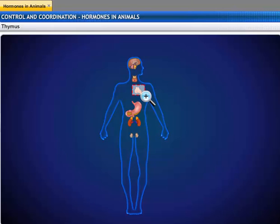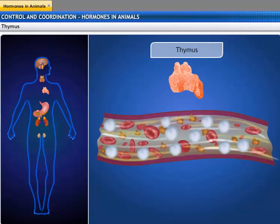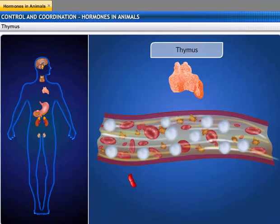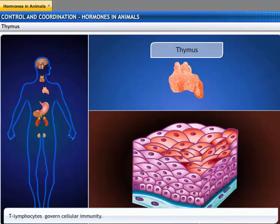The thymus is located in front of the heart in the upper part of the sternum. The thymus possesses a type of white blood cells known as T-lymphocytes. These T-lymphocytes govern cellular immunity, meaning they help cells recognize and destroy invading bacteria, viruses, abnormal cell growth such as cancer, and foreign tissue.